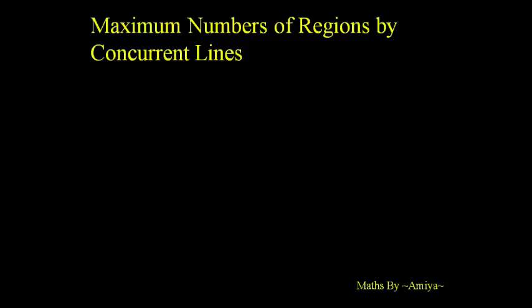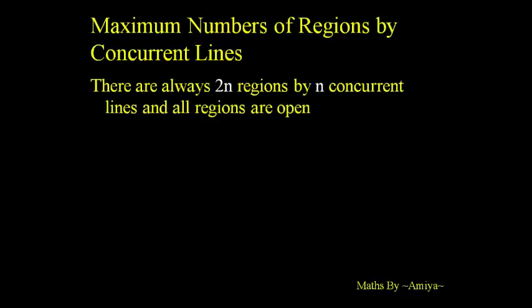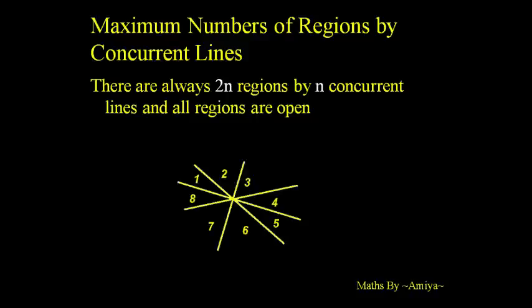The aim of this video is to learn the maximum number of regions by concurrent lines or non-concurrent lines. For concurrent lines, there are always 2n regions by n concurrent lines, and all regions are open. If we have four lines, then we have eight regions — just double the number of lines if they are concurrent.